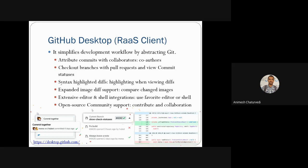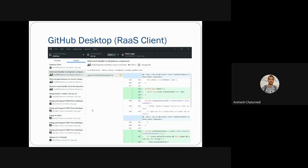The diff view uses syntax highlighting: green (plus) means lines added, and red (pink) means lines deleted. GitHub Desktop also expands image diff, meaning a visual image is created showing the differences reported as green, red, or blue highlights so you can compare and see the amount of change. It supports extensive editor and shell integration, so you can add your favorite editor or shell command prompt. GitHub Desktop is also an open-source community project you can contribute to.